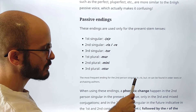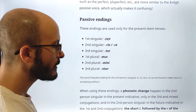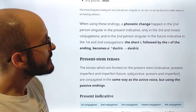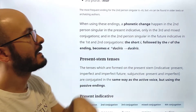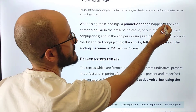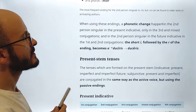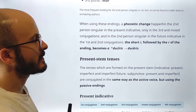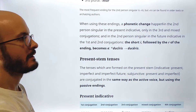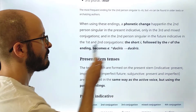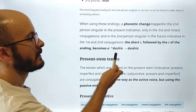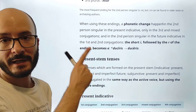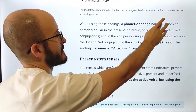When using these endings, a phonetic change happens in the second person singular in the present indicative — only in the third and mixed conjugations — and in the second person singular in the future indicative. The short 'e' followed by the 'r' of the ending becomes 'a'. So for example, 'duceris' becomes 'duceris' with that vowel change. That's just how it is.